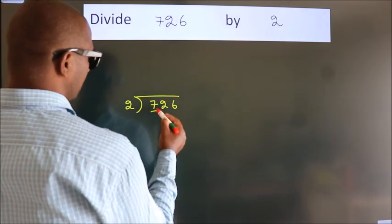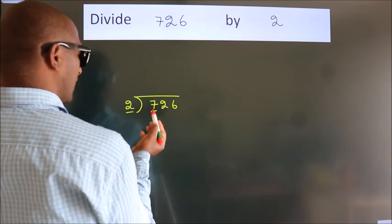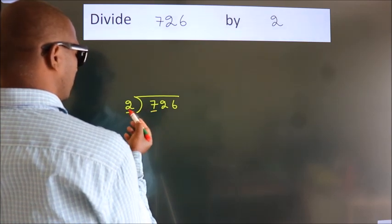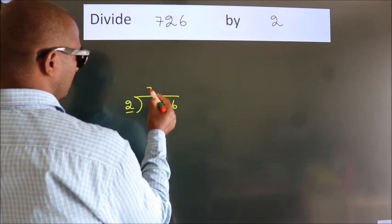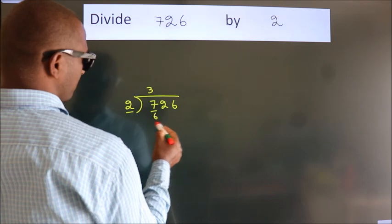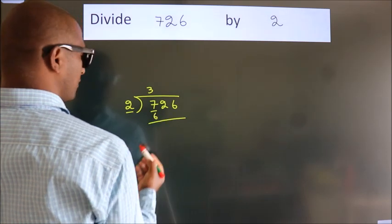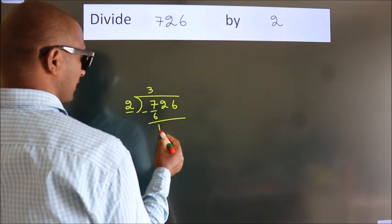Next, here we have 7, here 2. A number close to 7 in 2 table is 2, 3, 6. Now, we should subtract. We get 1.